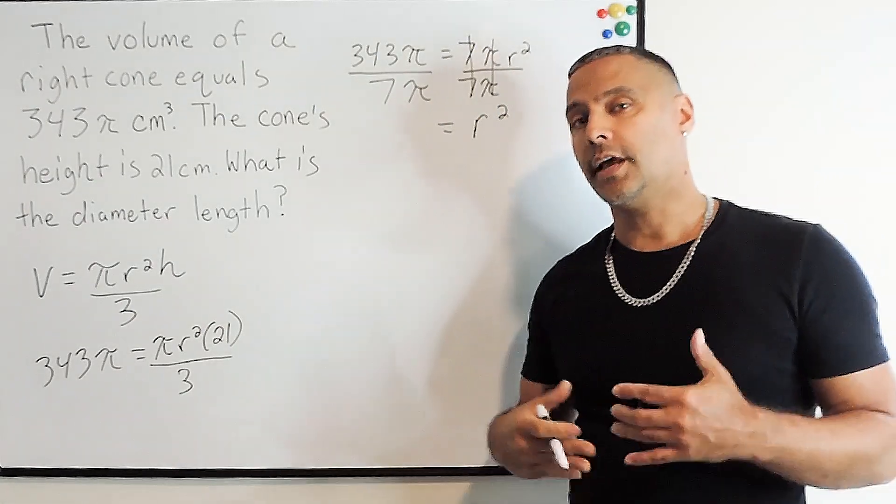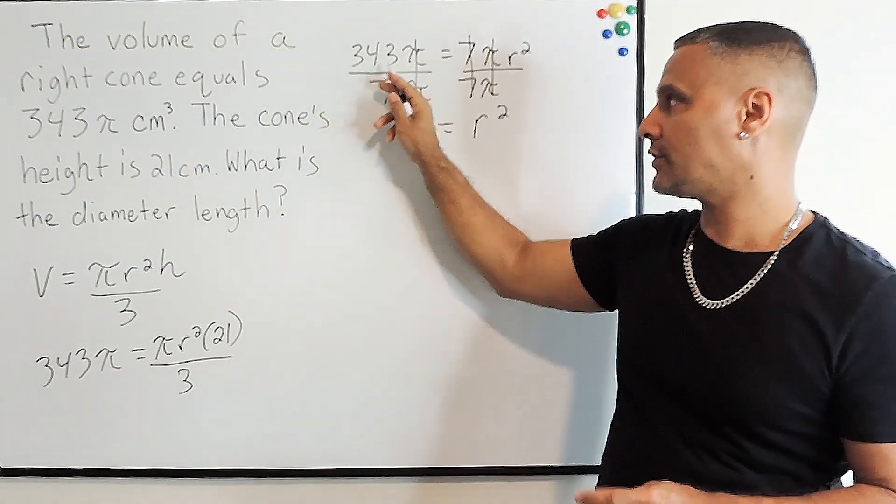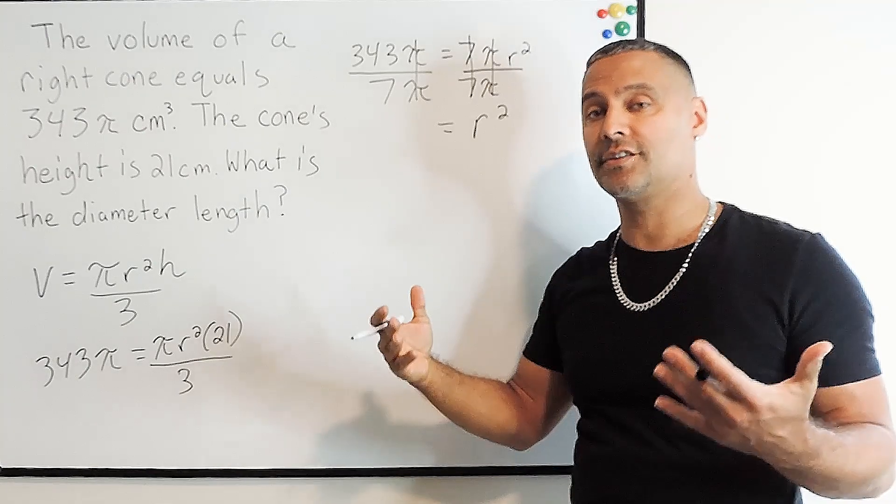Now we're going to cancel out π here, which leaves us with 343 divided by 7, which is 49.